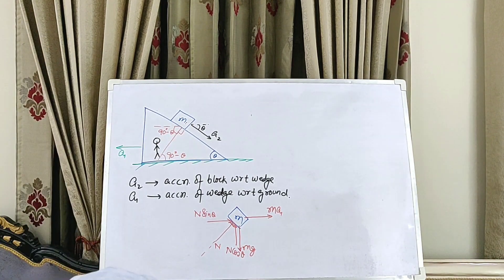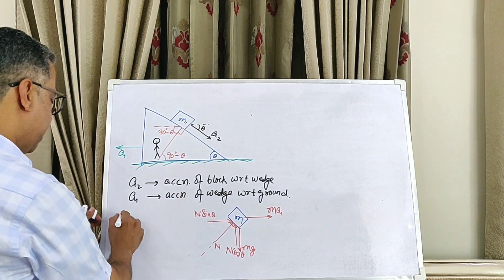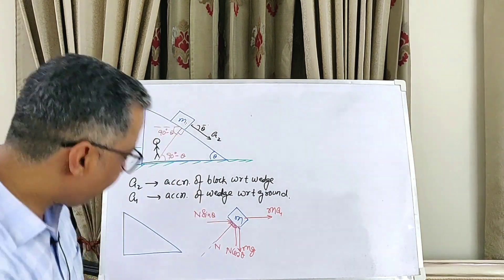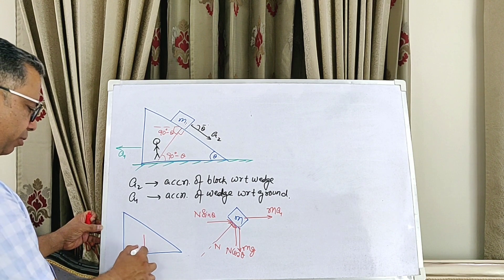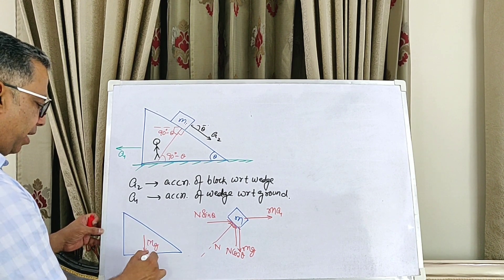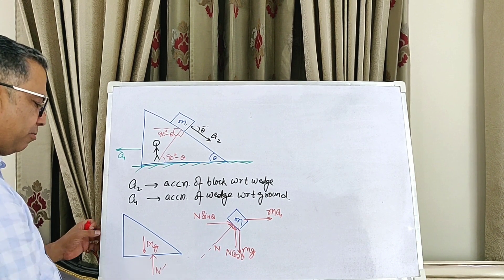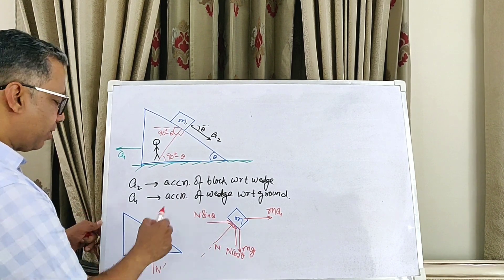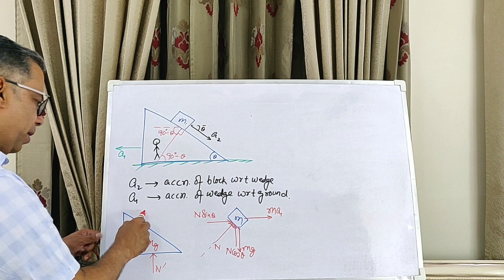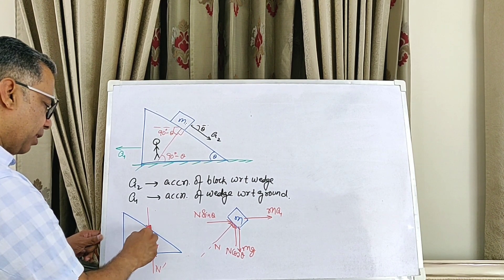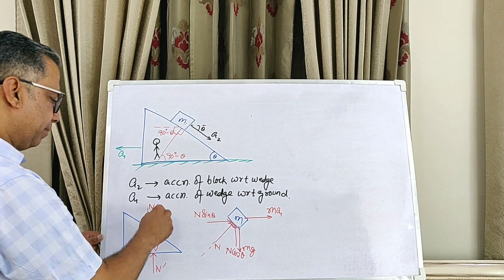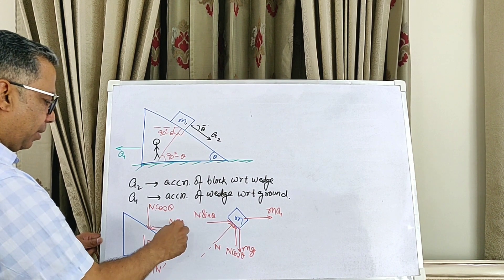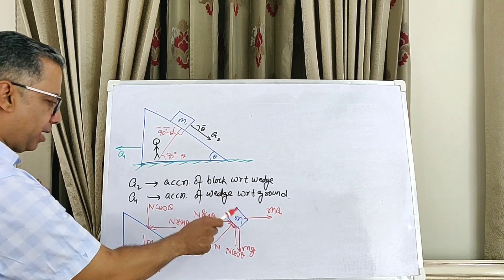Now let's look at the wedge. The forces on the wedge are: its weight Mg downward, a normal force N' from the ground, and the reaction forces from the block. Since the wedge exerted N cosθ and N sinθ on the block, by Newton's third law the block exerts equal and opposite forces N cosθ and N sinθ on the wedge.